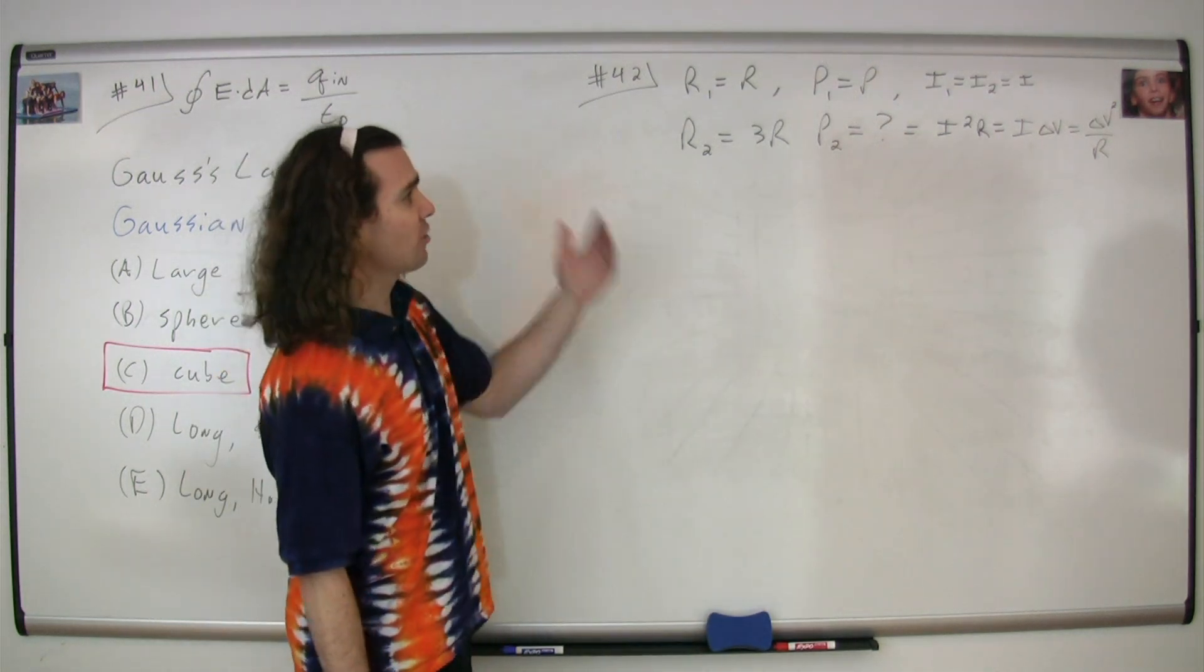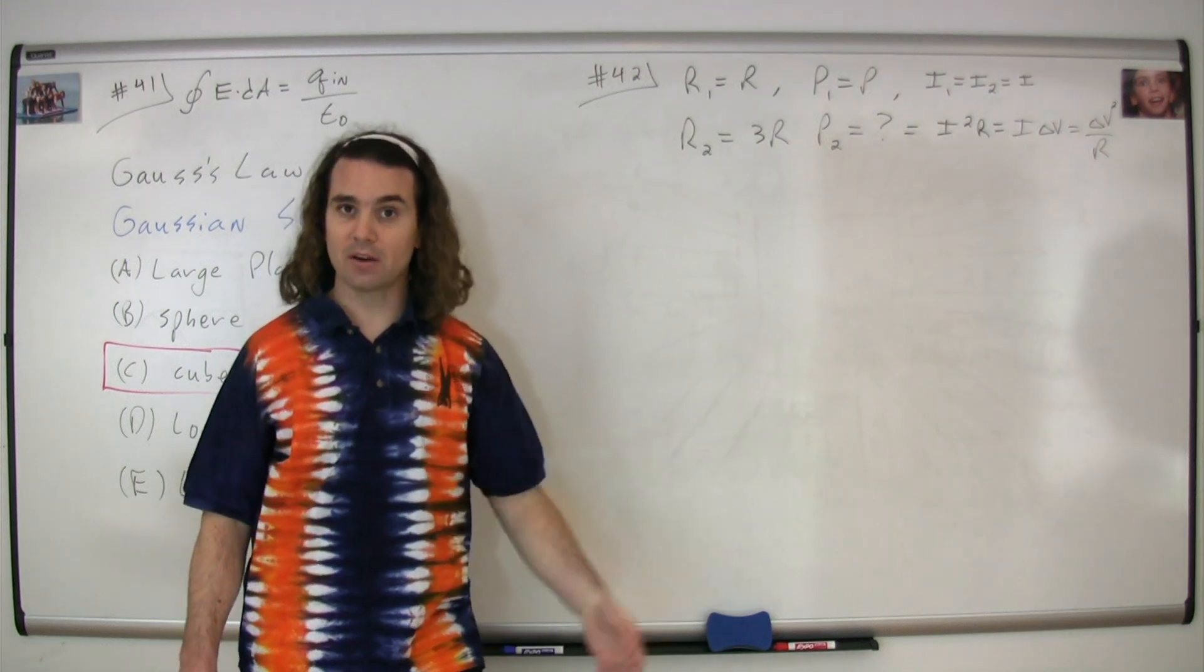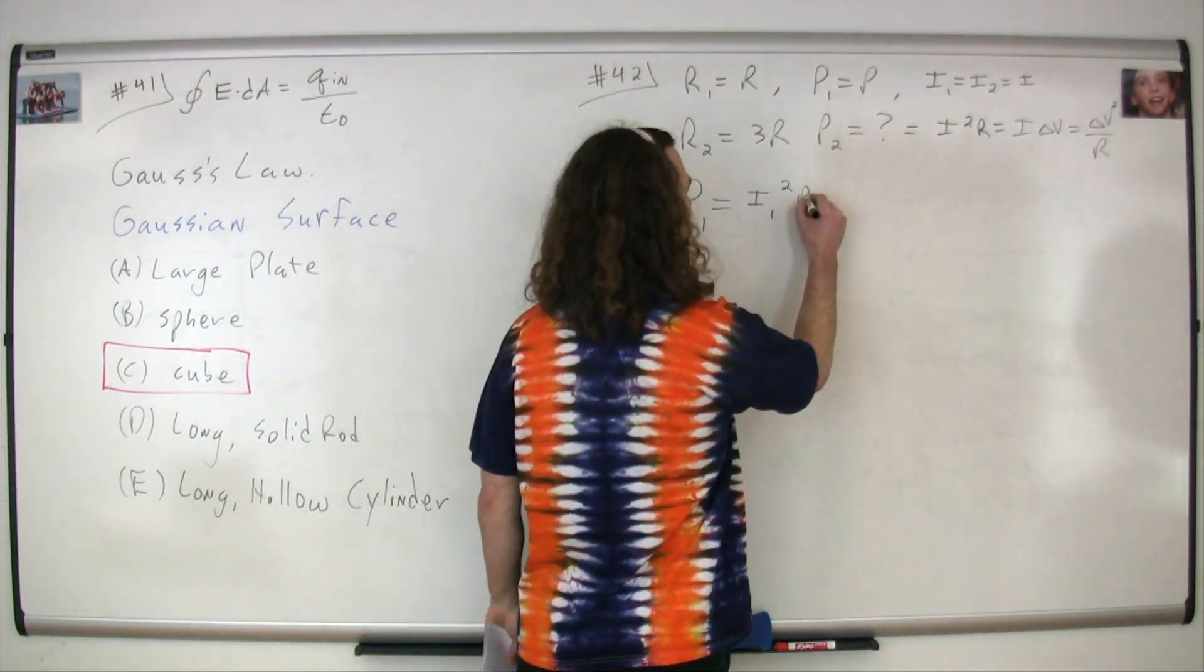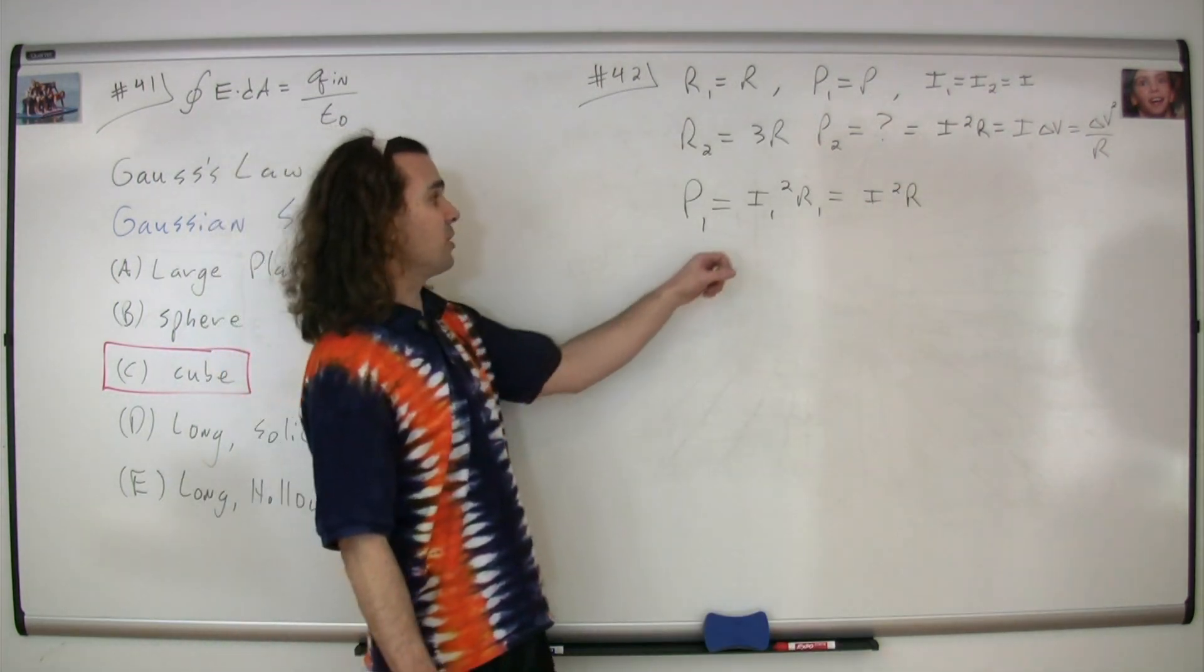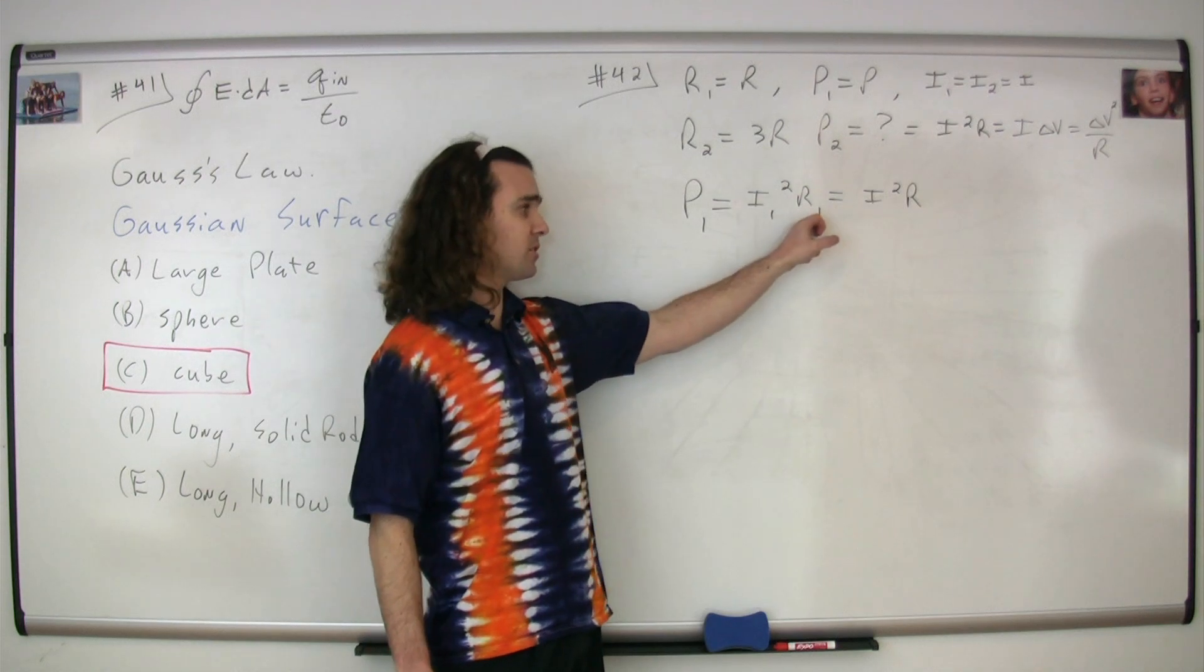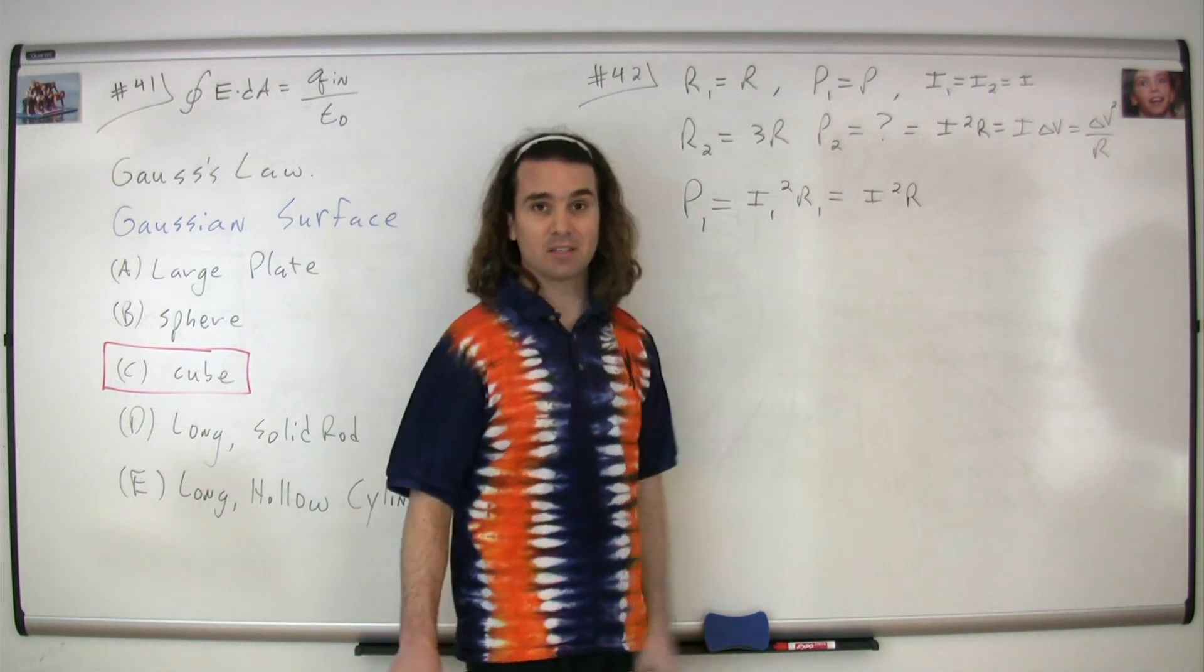We have current and resistance, so we'll use current squared times resistance. The power of the first wire is going to be the current through the first wire squared times the resistance for the first wire, or I squared times R.